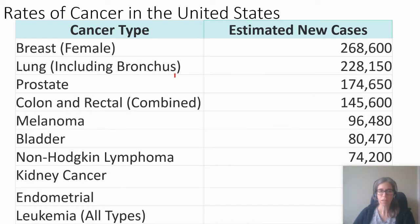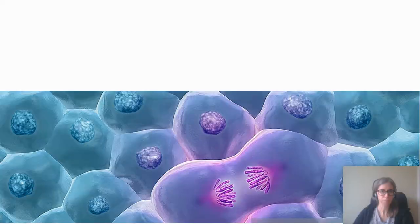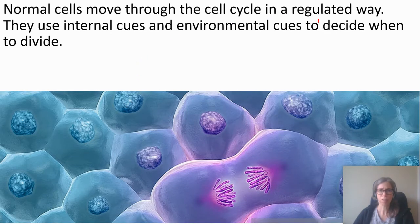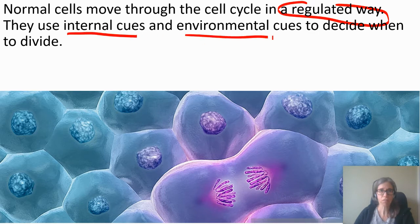Here are some rates of cancer — you really don't need to know any of these. Epithelial cells, meaning coverings: colon cancer, skin, bladder. These are all layers or coverings. Some others are not epithelial but still have vast rates of cell division. Normal cells move through the cell cycle in a regulated way; it's when they're not regulated the right way that they could become cancerous. So first we'll look at the normal regulated way — how cells normally know how to go through the cell cycle. They use internal cues and environmental cues.